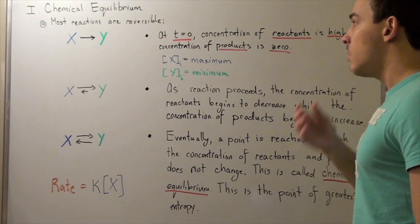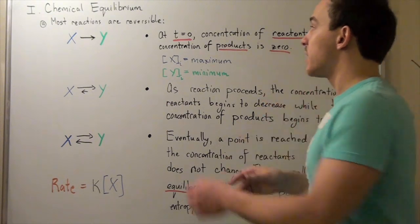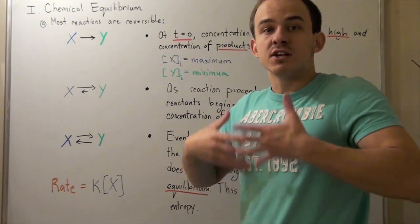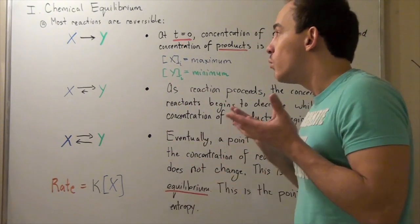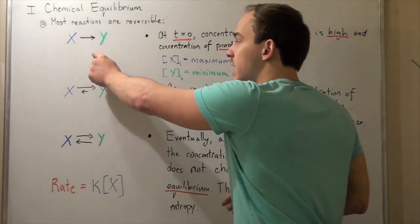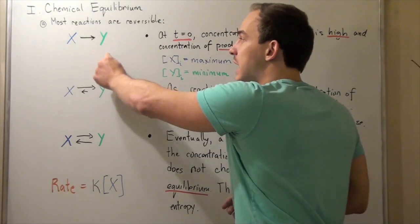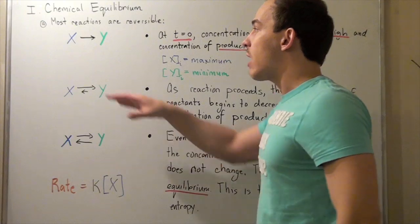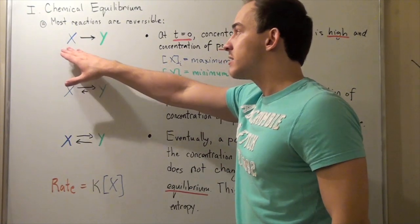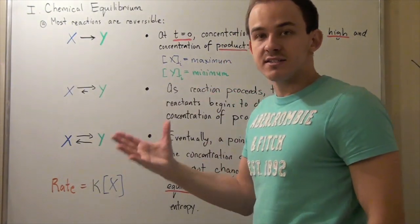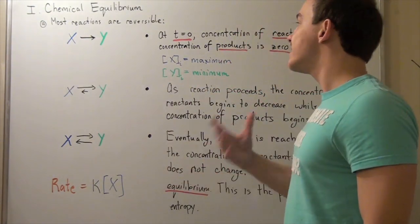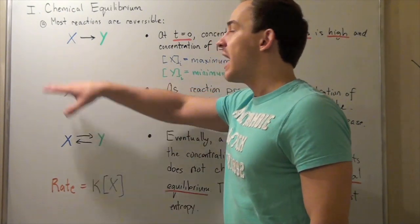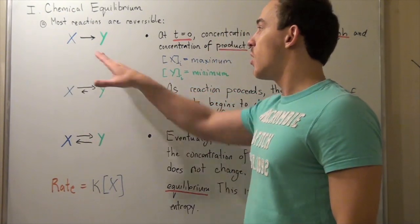The concentration of products is actually zero. At time zero, before our reaction has even occurred, we don't have any of our products yet — the products haven't formed, so our Y is zero. Our X, the concentration of our reactants, is at its maximum because none of it has converted to Y yet.